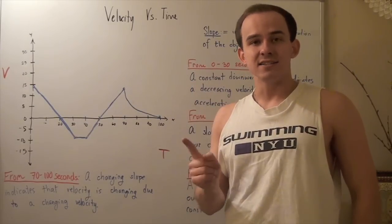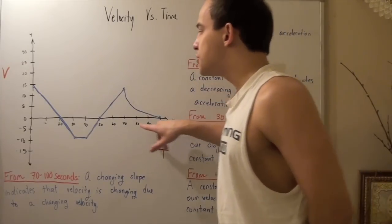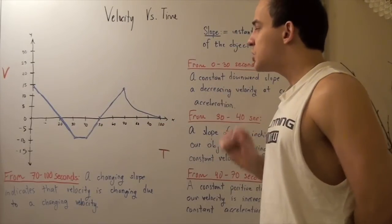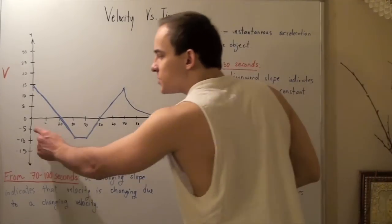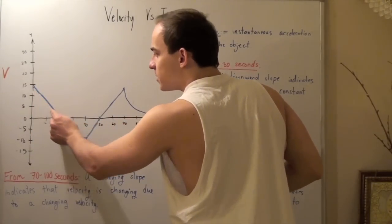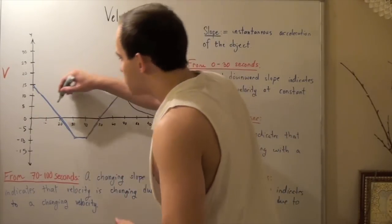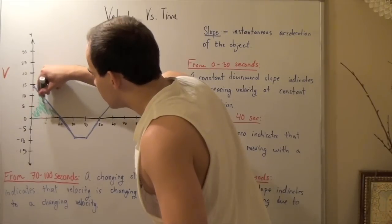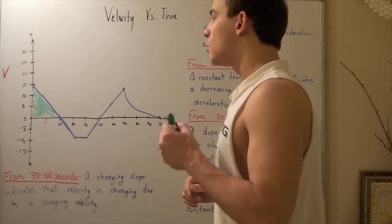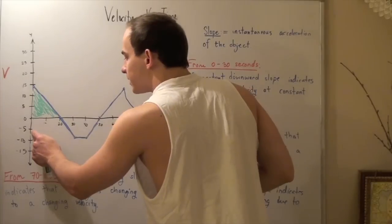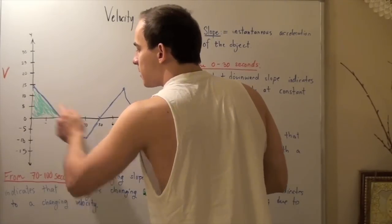Our acceleration is not constant from 70 to 100 seconds, and when the object gets to 100 seconds, its velocity reaches zero. Now let's talk about what the area under our curve represents. Suppose we go from zero seconds to 20 seconds — this triangular area represents the displacement of our object. In other words, when the object goes from zero to 20 seconds, its displacement equals this area.